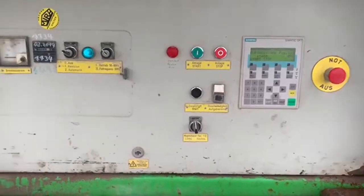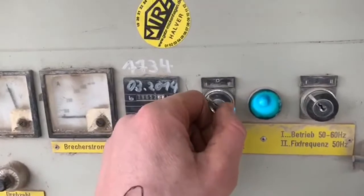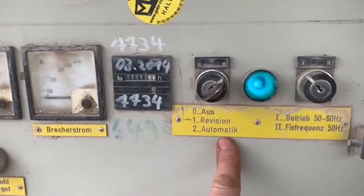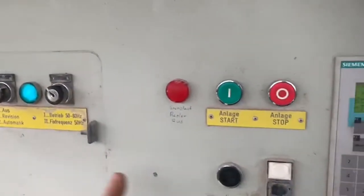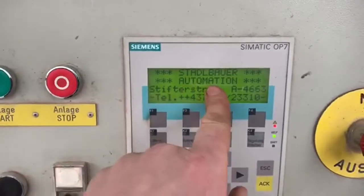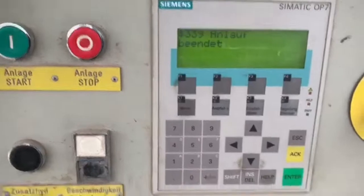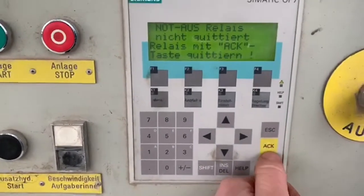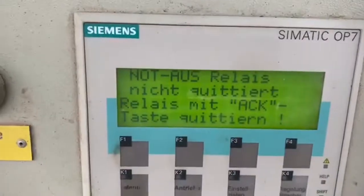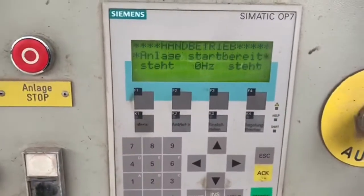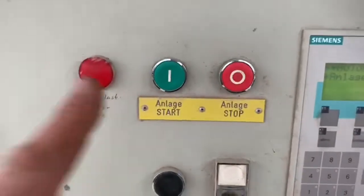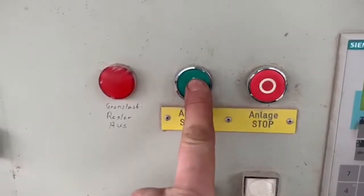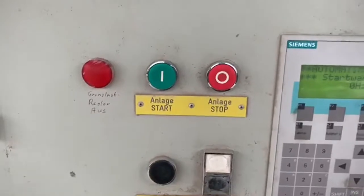To use automatic mode, bring the key to position number two. The machine is now in automatic mode and can be activated once the display and computer are set up. You have one opportunity to quit with ACK as shown in the display. Push it, and then you can start with the green button 'Start Anlage' to activate the process.